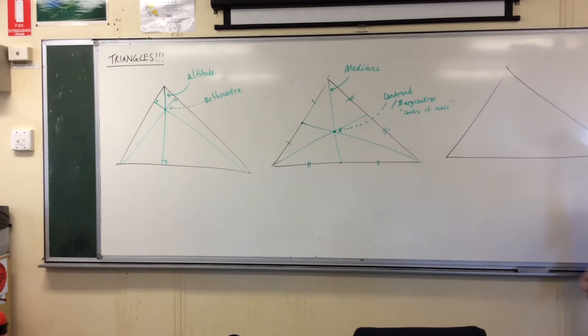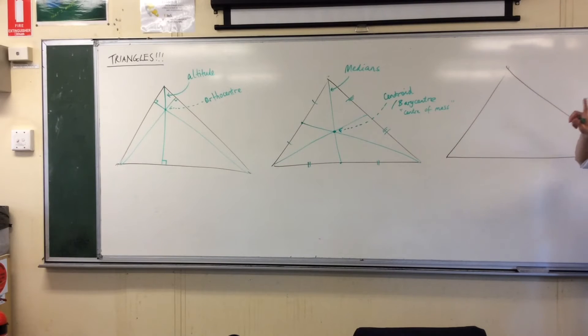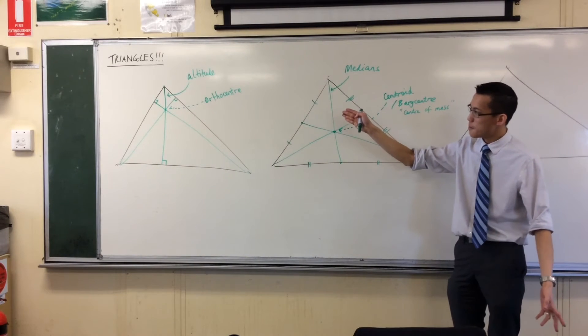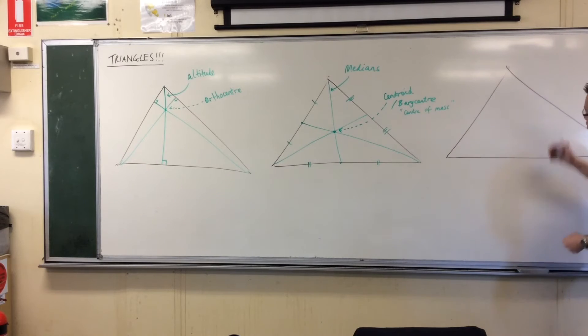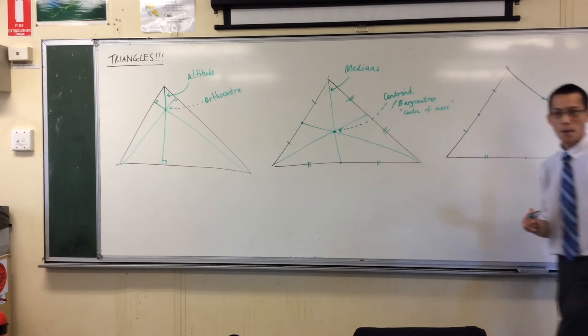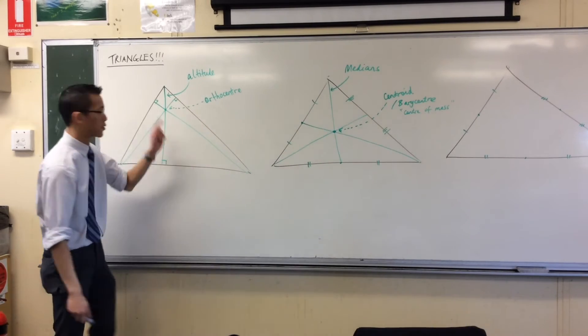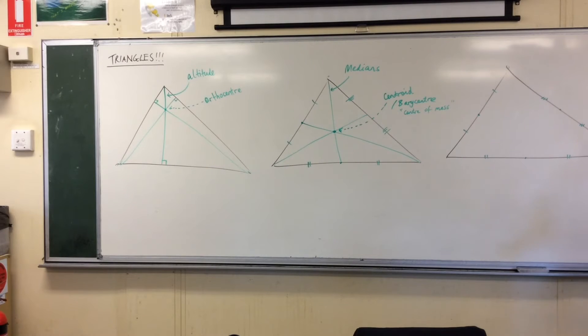So another contender for the center of the triangle is one more center I'm going to show you. It's the least common, but it's kind of handy. Now, can you see how here I've got perpendicular lines, here I've got midpoints. A natural kind of direction to go in is to take the best of both worlds. What if you took all the midpoints, but instead of joining to the opposite vertices, which all of these are doing, you opt for the midpoints, but then you go perpendicular. This is going to be tricky, but I'll do my best.